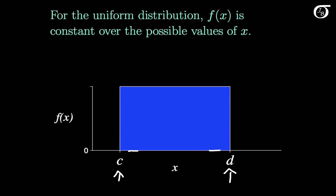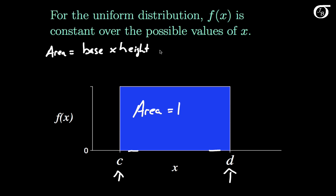This is a continuous probability distribution, so we know that the area under the entire curve has to equal 1. But for the uniform distribution, that area is simply a rectangle. The area of a rectangle is base times height. The base is d minus c and the height is f.